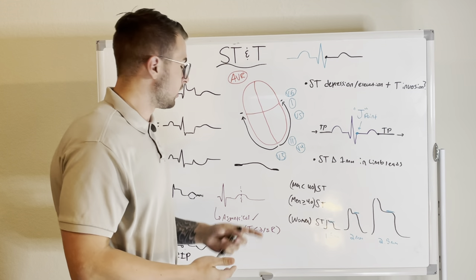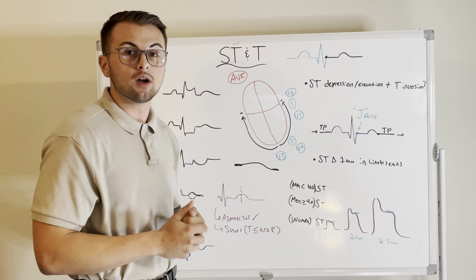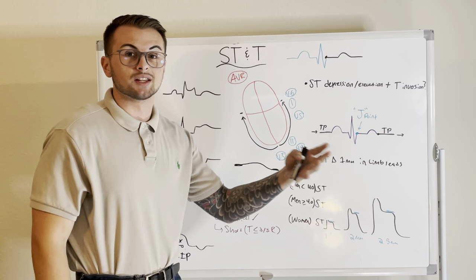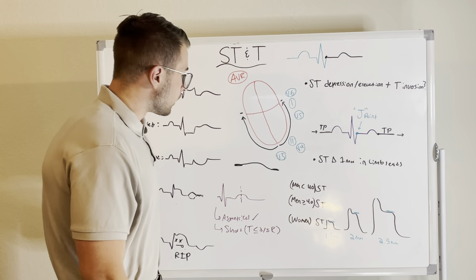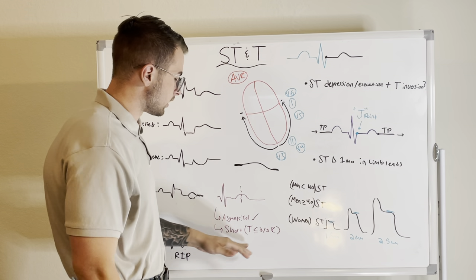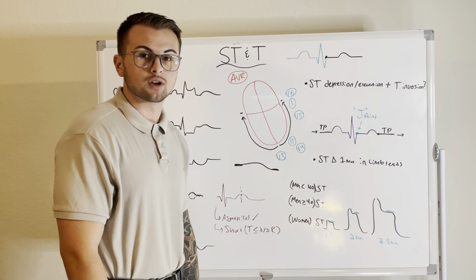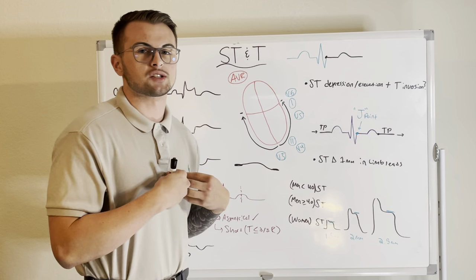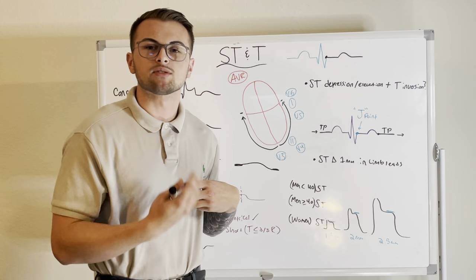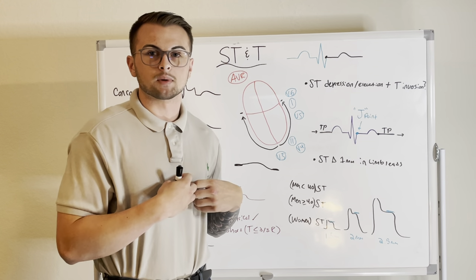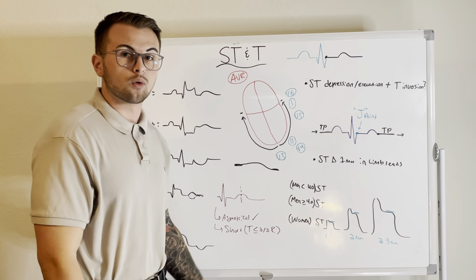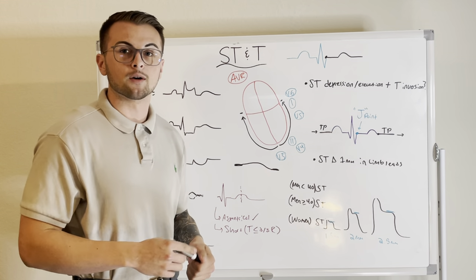Regarding the size of T waves: they should be small in amplitude — less than six millimeters in the limb leads and less than 12 millimeters in the chest leads, though this can vary. A good general rule is that T waves should be less than two thirds the height of the R waves. The chest leads are closer to the heart, so those electrical impulses are stronger, meaning it's okay if T waves are a little bigger in the precordial leads.